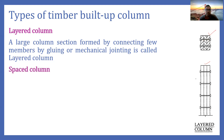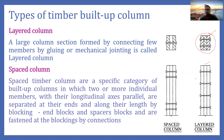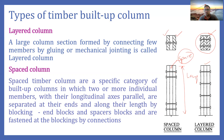The next type is called the spaced column. A spaced column is similar to the layered column, but if we compare them: the layered column is a solid column with no gap in the cross-section, whereas in the spaced column there is a gap between the planks. One plank is on the right side and one on the left, with a space maintained along the length of the column. These columns are used when light loads are applied, to save material.